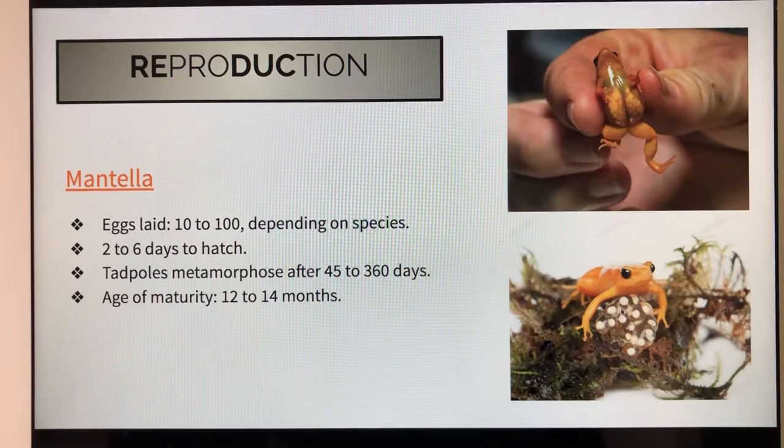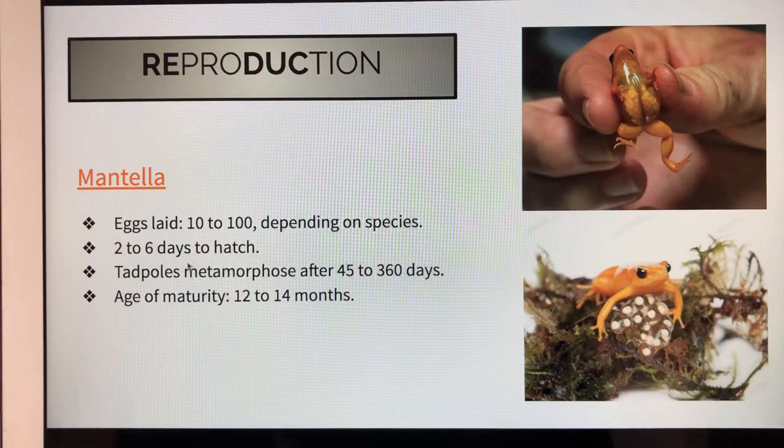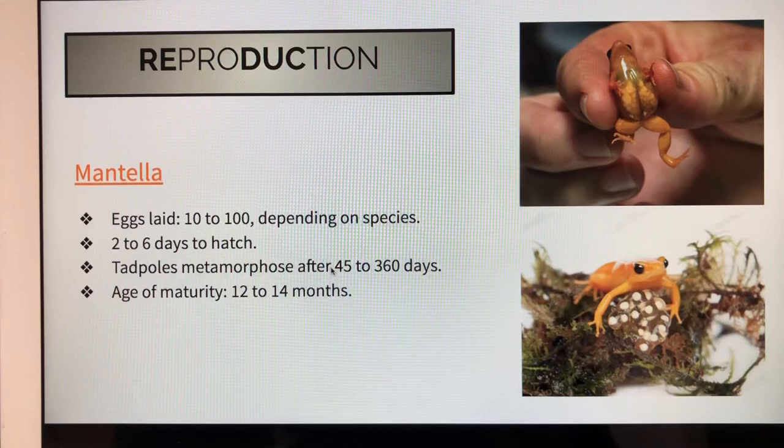The mentia lays 10 to 100 eggs and it takes two to six days to hatch. The mentia are tadpoles and it takes 45 to 360 days for the tadpoles to metamorphose. The age of maturity is 12 to 14 months.